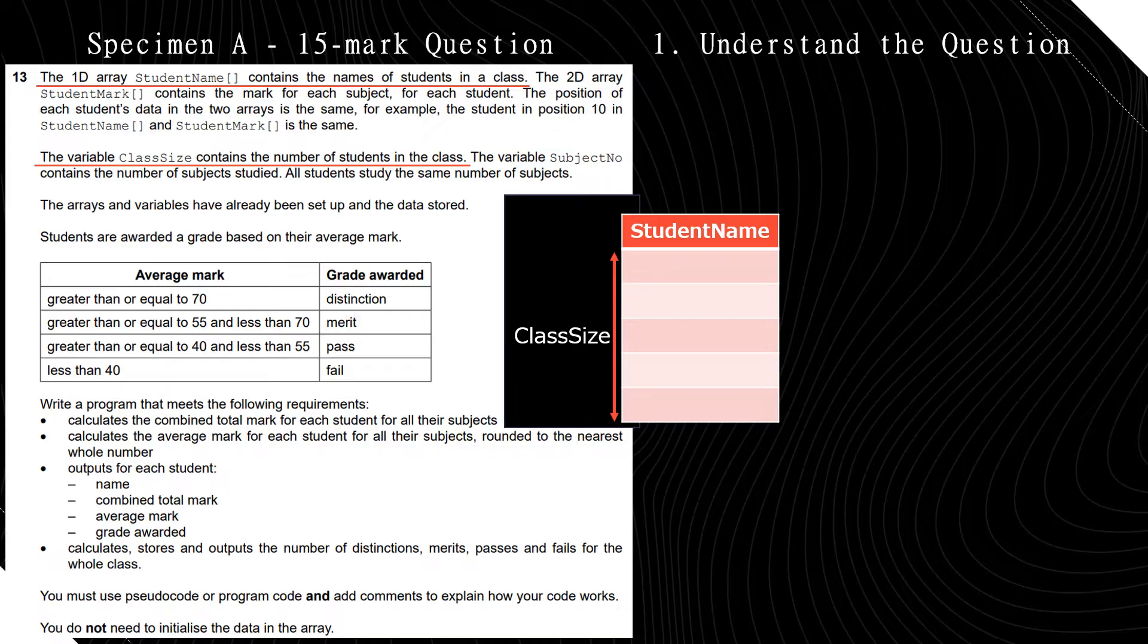The arrays and variables have been set up and the data is stored. So we don't really care what the data is. You're going to manipulate the data, but you don't need to see it. I want you to take a minute to picture all the data structures that you need. So we need a one-dimensional array. What else do we need, and what are the dimensions of those arrays?